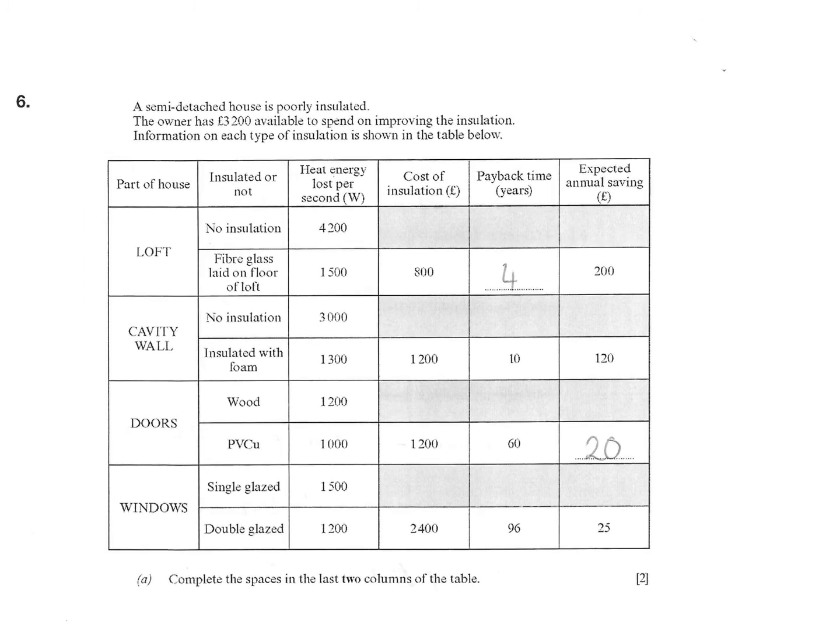Questions looking at how to insulate your home to make sure that you limit the amount of convection, conduction and radiation that is lost. The homeowner has £3,200 available to spend on improving the insulation. He has four different types of insulation that he could use. It's a semi-detached, poorly insulated home. Complete the spaces in the two columns above.